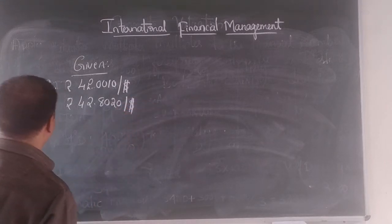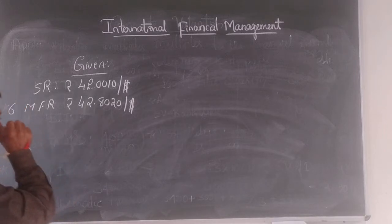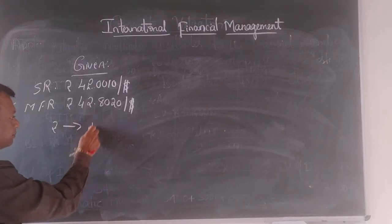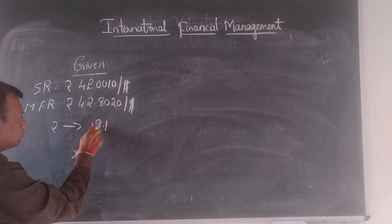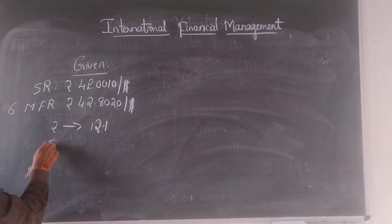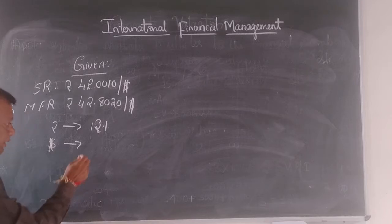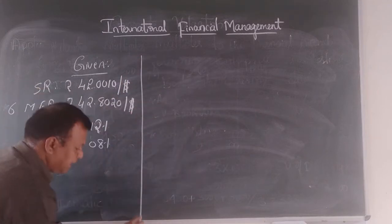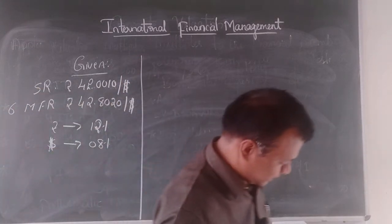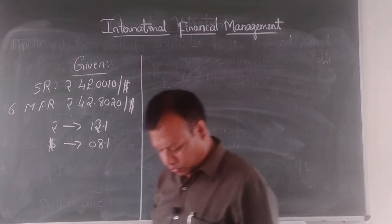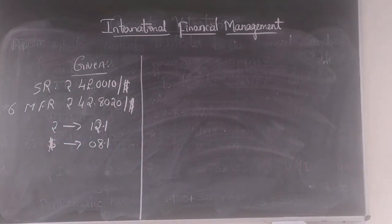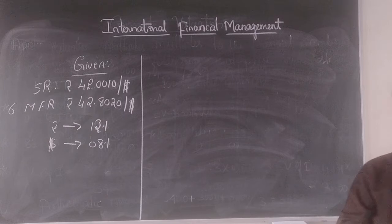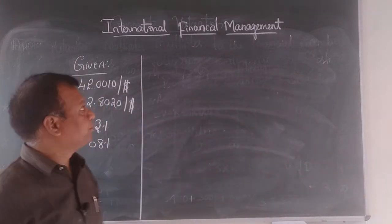The given data: rupee interest rate is 12 percent, dollar interest rate is 8 percent. With this information, they ask us whether there is any arbitrage possibility or not. For this, we need to understand one rule first.